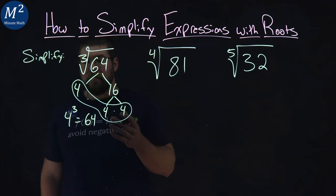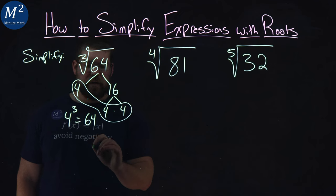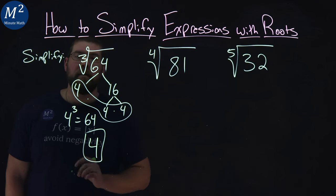From there, well, I have my answer. Since 4 cubed is 64, the cube root of 64, kind of the opposite there, is a 4. And there we have it.